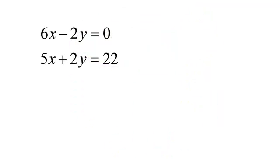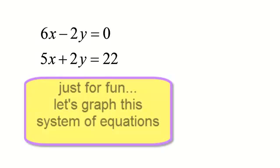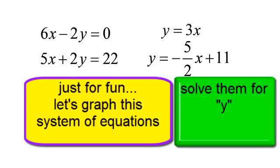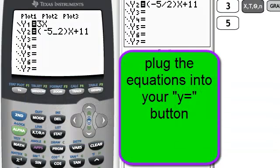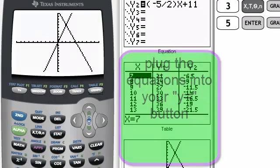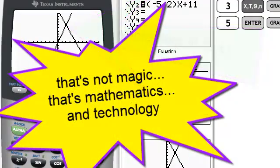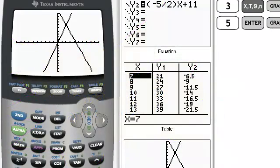Now let's graph this in the graphing calculator. I need to solve both of these equations for y, which I've done here. I graph them, and sure enough they intersect at the point 2, 6. On another video I will show you how to find this intersection point, but let's get back to our matrices.